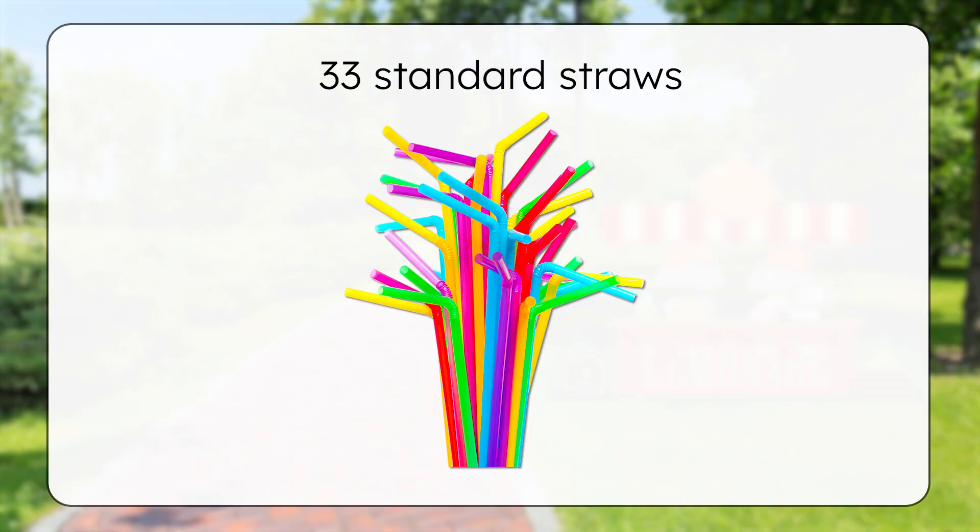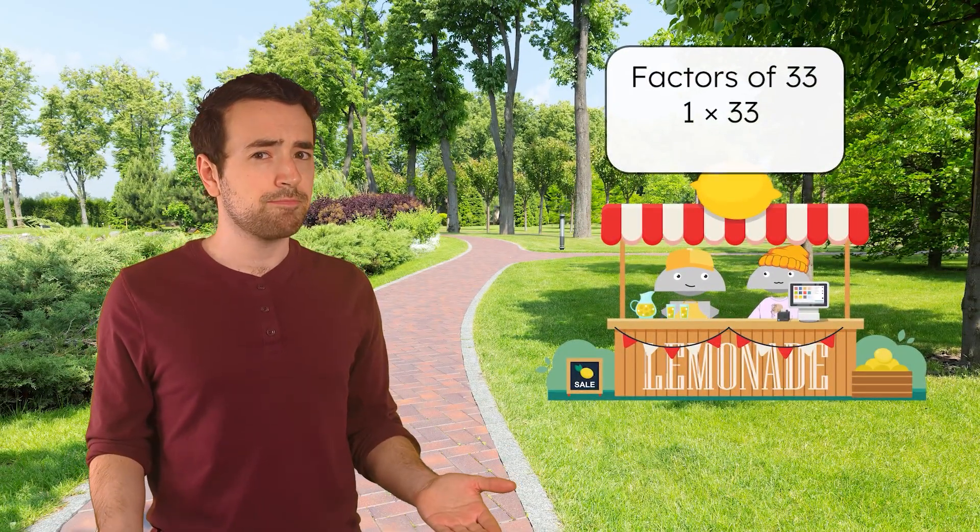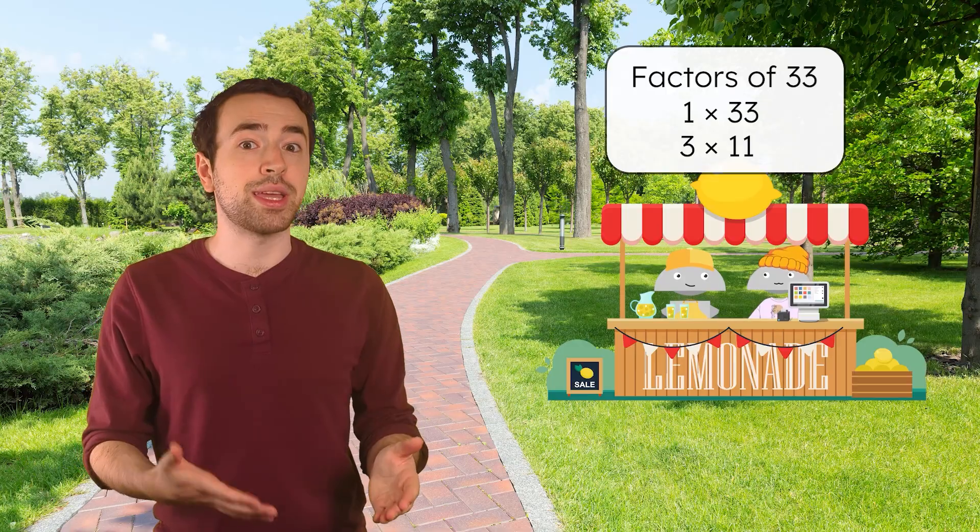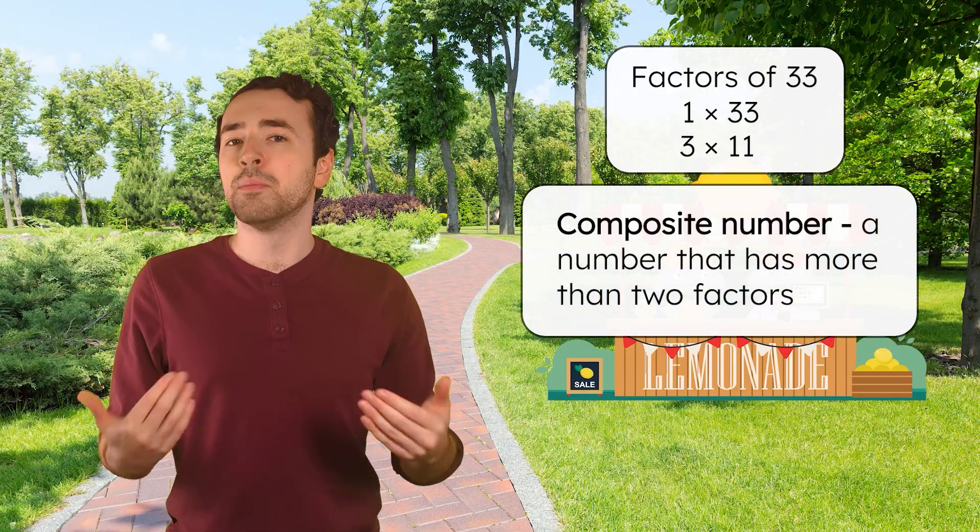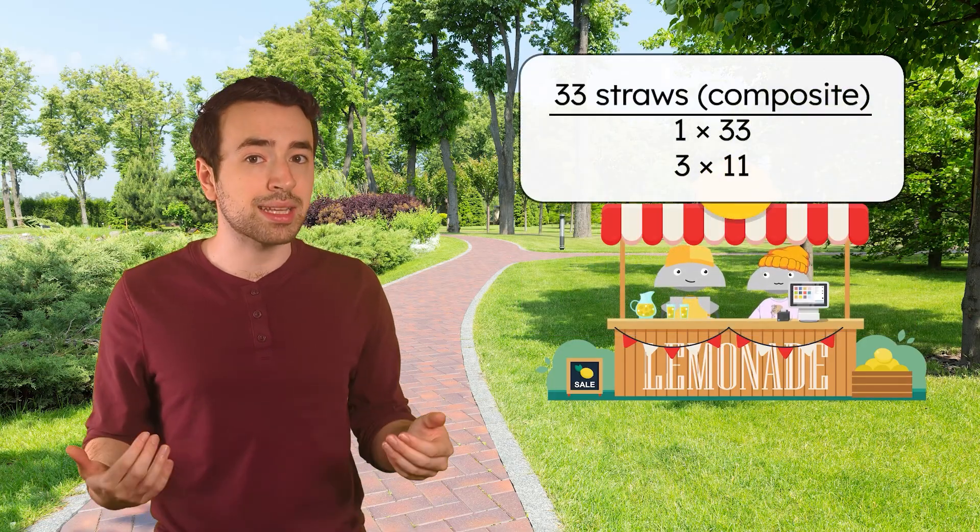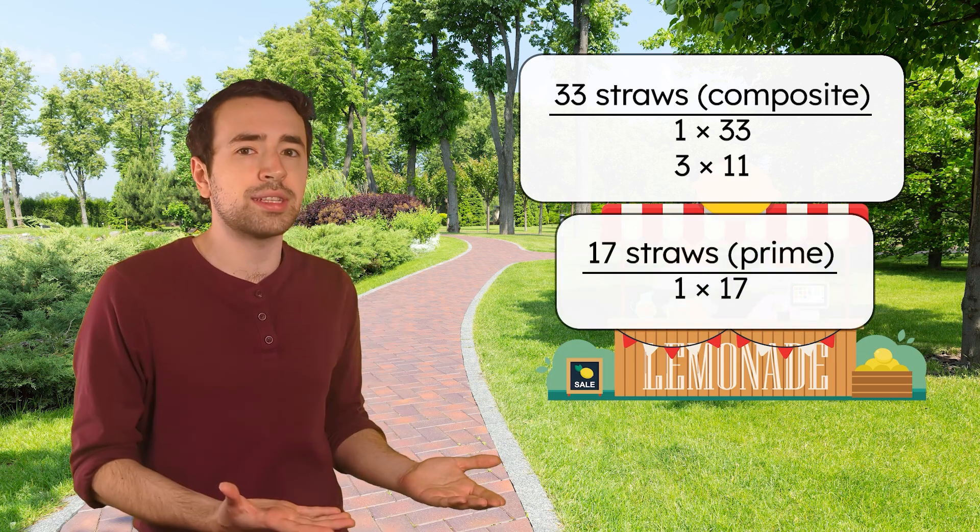What about the other 33 standard straws? How can we organize those? Pause here to record all the factors of 33 in your guided notes. So 1 and 33 are factors, but are there any others? 33 is odd, so 2 isn't a factor. But 3 times 11 equals 33, so 3 and 11 are factors. When a number has more than 2 factors, it's a composite number. Since 33 is a composite number with more factors than just 1 and itself, we have more ways to organize those straws.